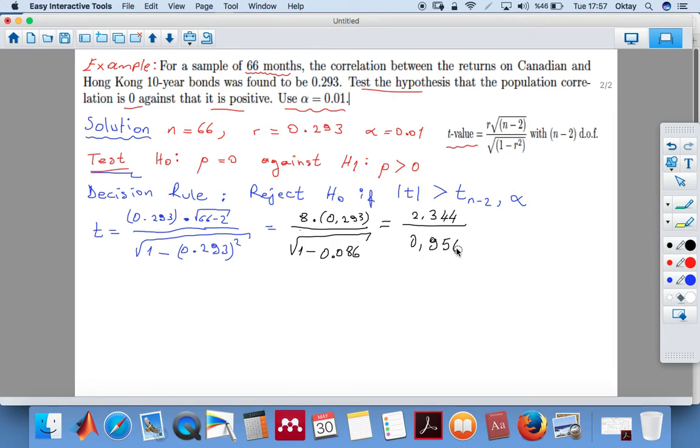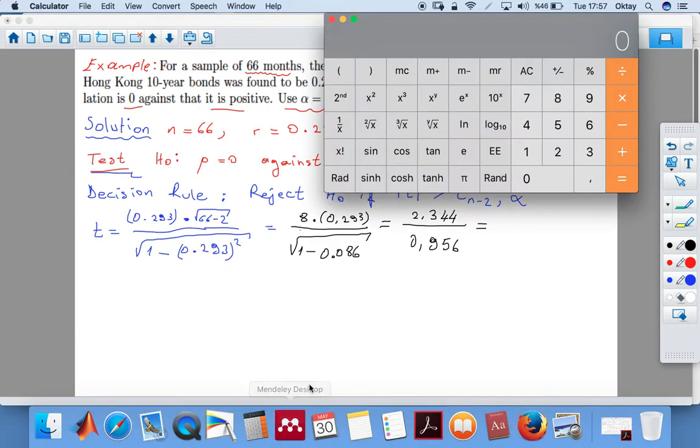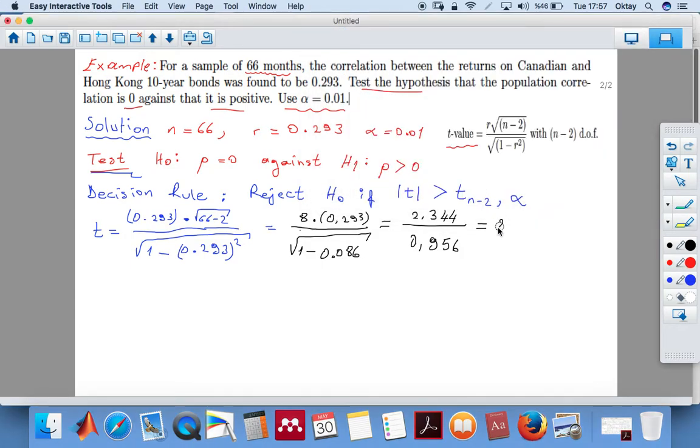So this equals 2.344 divided by 0.956, which equals 2.45 or 2.452. Let's write 2.452.